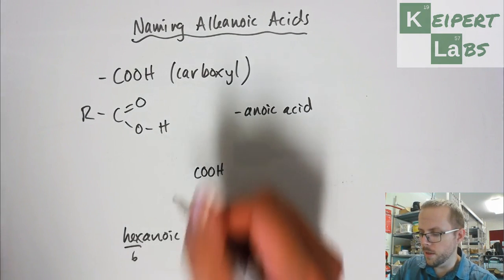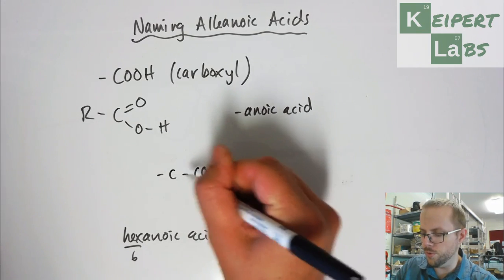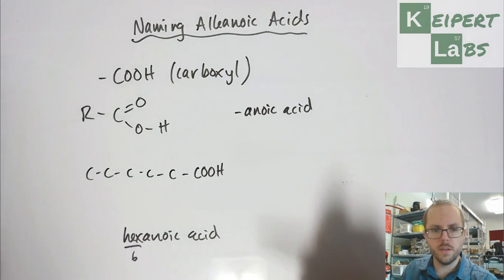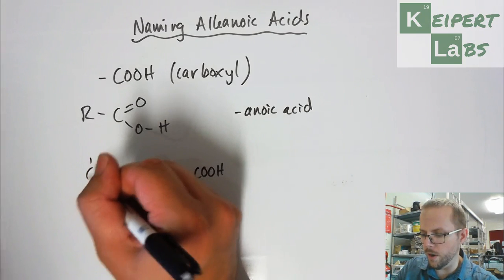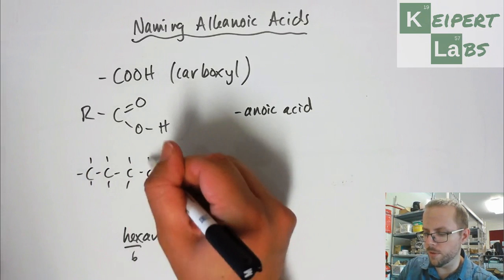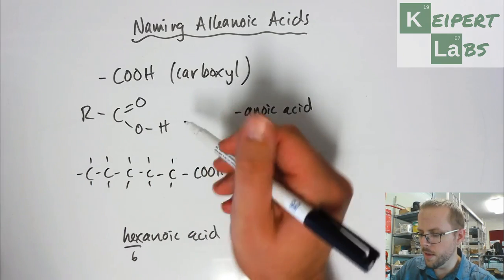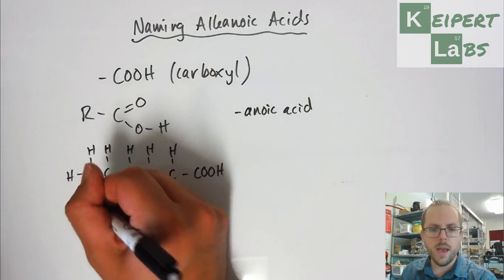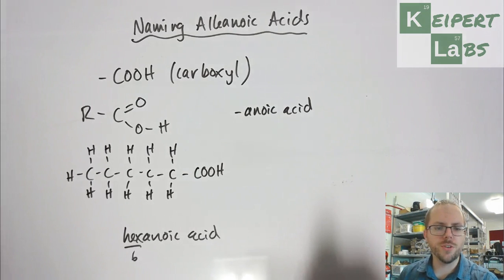So six carbons. That's one, two, three, four, five, six. And then I know, because I'm not told about any other groups, that everything else would be hydrogen. So there's our structure of hexanoic acid.